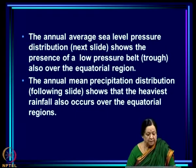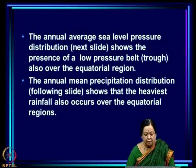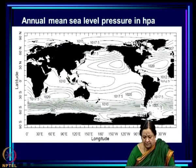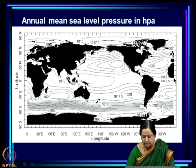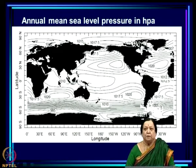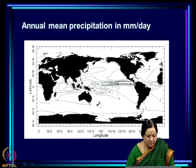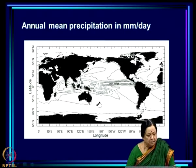In response to this, the annual average sea level pressure distribution shows a low pressure belt or trough over the equatorial region. So the incident solar radiation, the surface temperature, and the pressure all have extrema near the equatorial region — radiation and temperature being maximum, and pressure being minimum around the equatorial region.